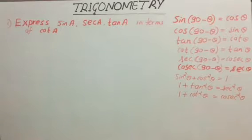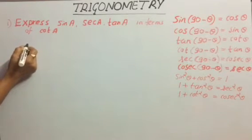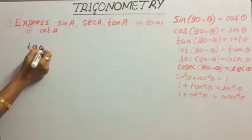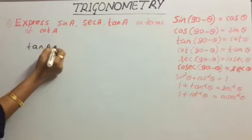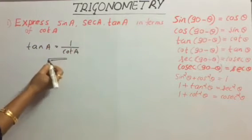And finally, let us consider tan a. We know that tan is the reciprocal of cot, so tan a = 1/cot a.